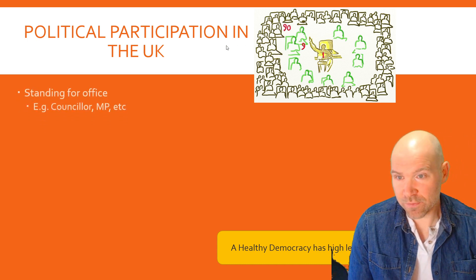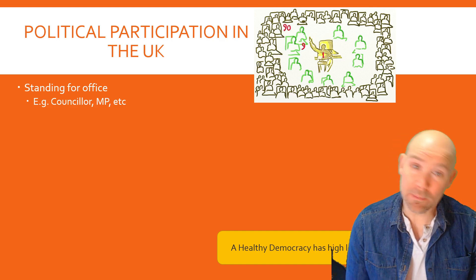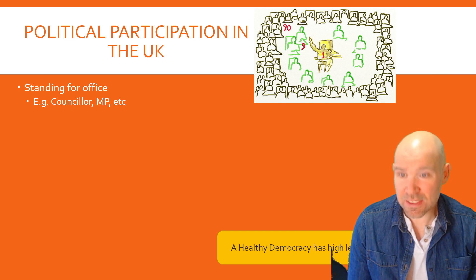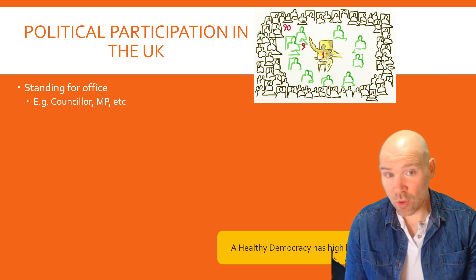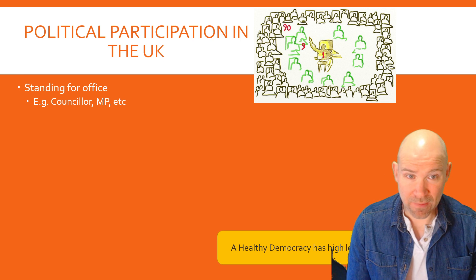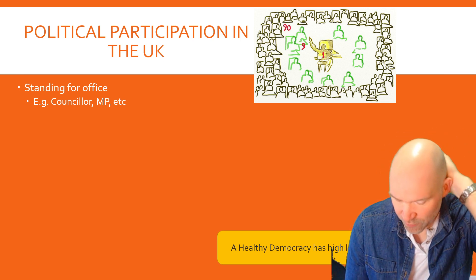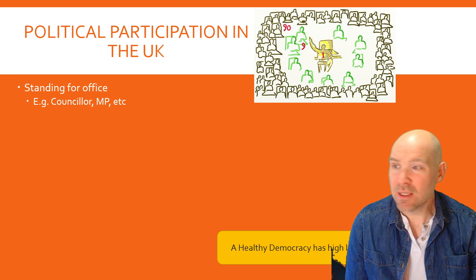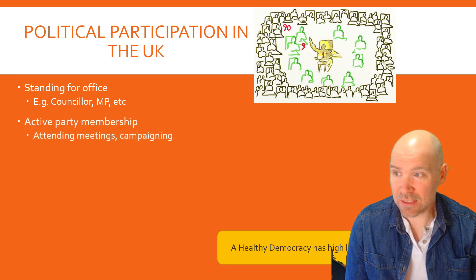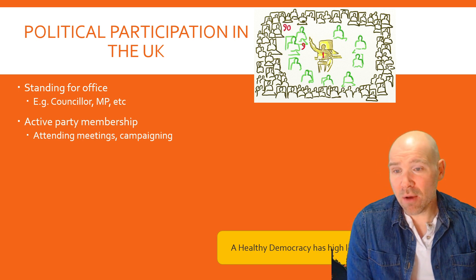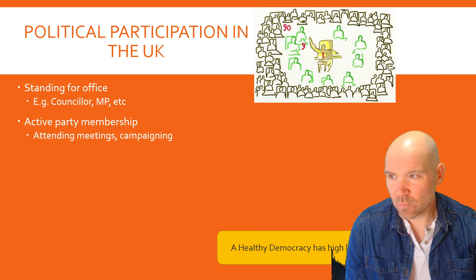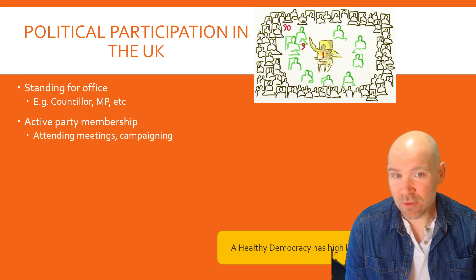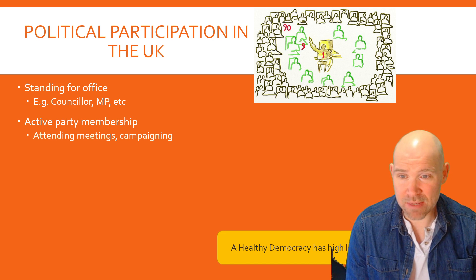How can you participate in the UK? The first obvious way is that you can stand for office — to be a local councillor or an MP. There's nothing that actually stops you from standing, apart from age requirements. Anyone can participate in politics, and if elected, anyone could be prime minister, which is not true in all countries. Active party membership is another route, though we might start to question this, because the vast majority of people are not members of political parties anymore — it has gone down and down over time.